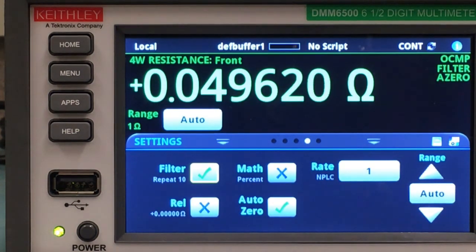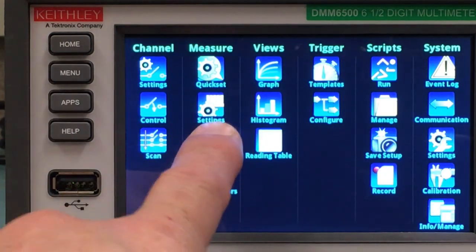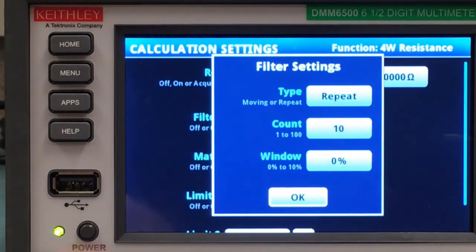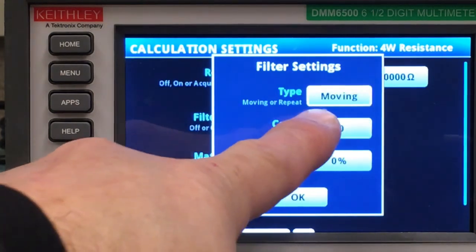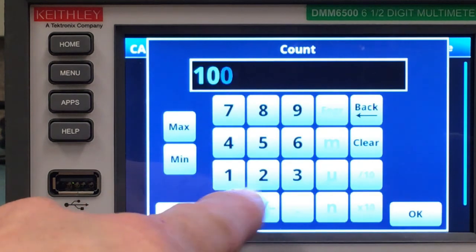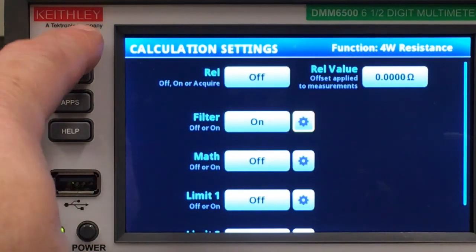I want to smooth that out a little bit more, so I go to menu calculations. Let's adjust my filter, and I want to make it a moving filter with a count of 100. Let's return to the home screen.